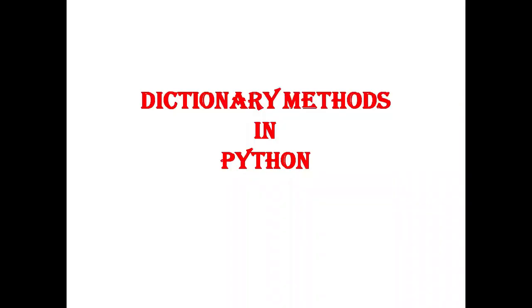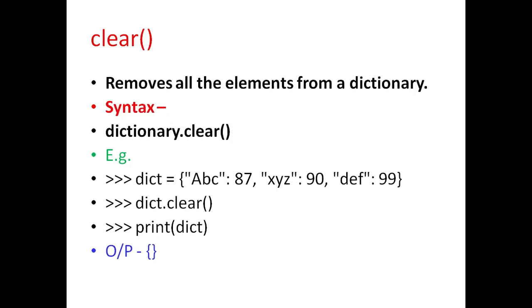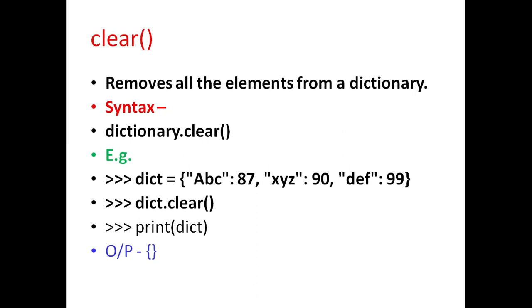Here we will see dictionary methods in Python. First is clear, which removes all the elements from a dictionary. The general syntax is dictionary.clear. For example, if dictionary dict is defined with these elements and if we give the command dict.clear, and again when we print the dict, it will give the empty dictionary output.